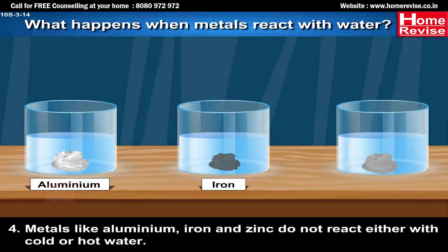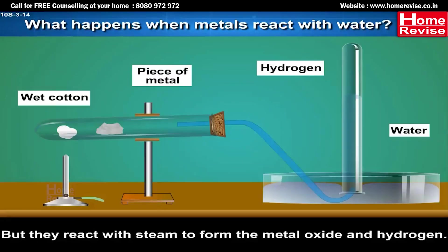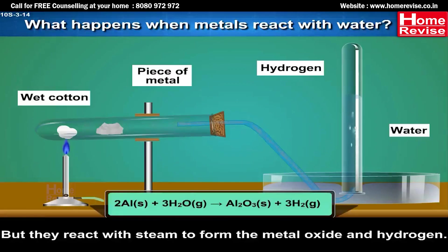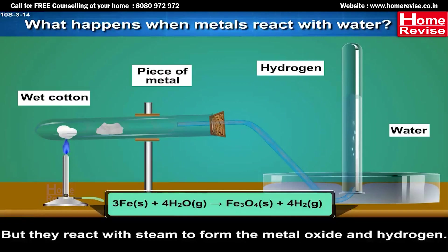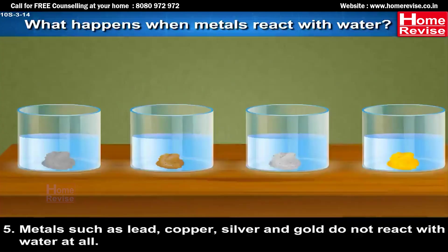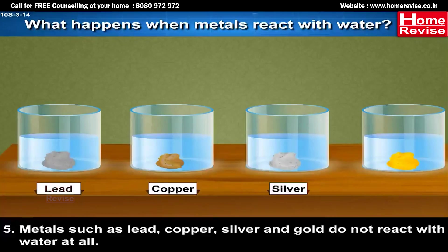Metals like aluminium, iron, and zinc do not react with cold or hot water, but they react with steam to form the metal oxide and hydrogen: 2Al(s) + 3H₂O(g) → Al₂O₃(s) + 3H₂(g); Fe(s) + 4H₂O(g) → Fe₃O₄(s) + 4H₂(g). Metals such as lead, copper, silver, and gold do not react with water at all.